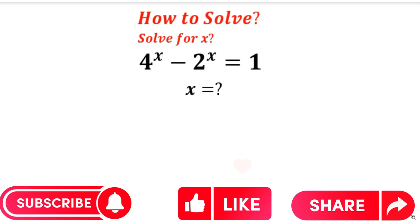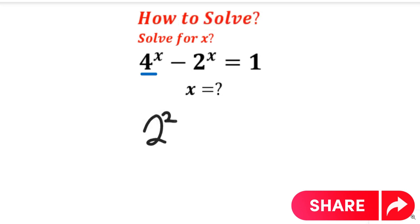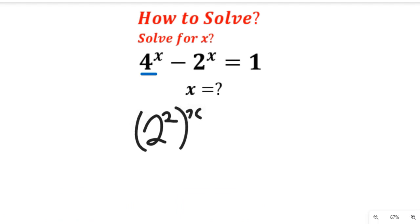Now let's solve this question. We're going to express 4 to each factor. So we'll express 4 as 2 to the power of 2, all to the power of x, minus 2 to the power of x, and that will be equal to 1.